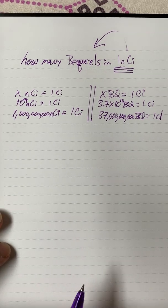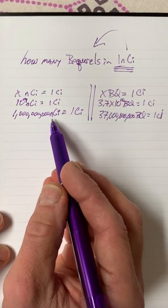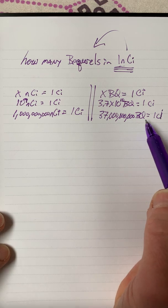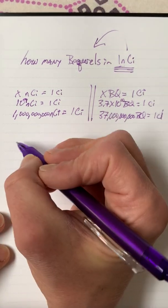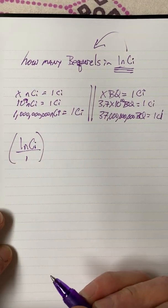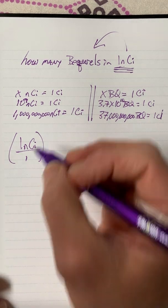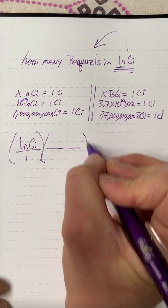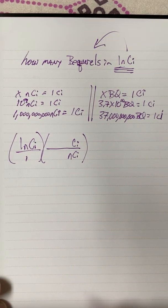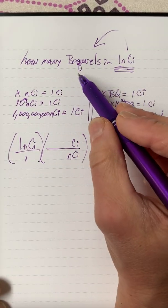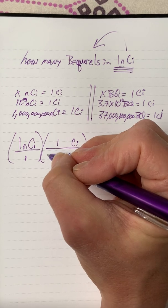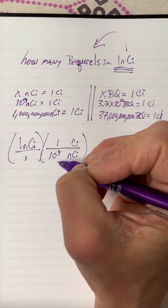So we have our numeric prefix conversion — a billion nanocuries in a curie — and our unit conversion — 37 billion becquerels in one curie. We start with our one nanocurie over one. The nanocuries are in the numerator, so we divide by a conversion factor that cancels nanocuries and gives us curies, since we're ending up in becquerels, not nano-becquerels.